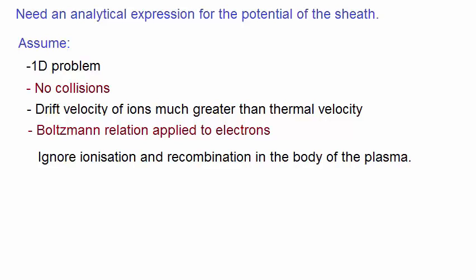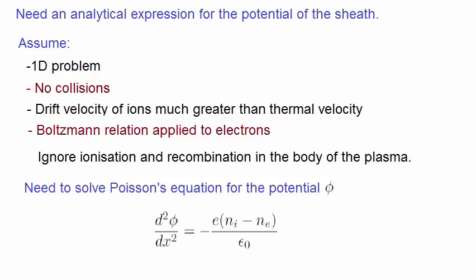The way we're going to obtain the potential is to solve the Poisson equation, given by this in one-dimensional form. In order to solve the Poisson equation, we first need to obtain expressions for the densities of ions and electrons.